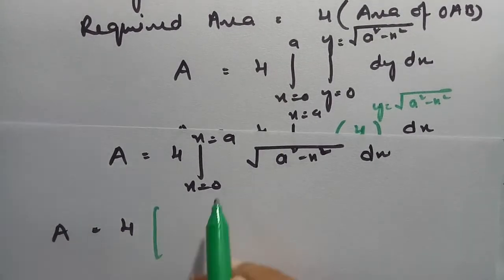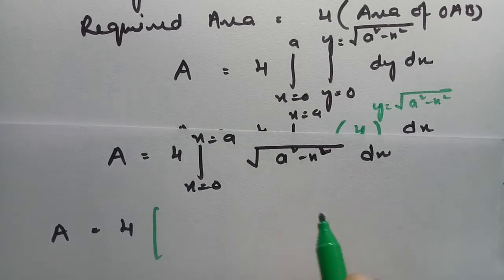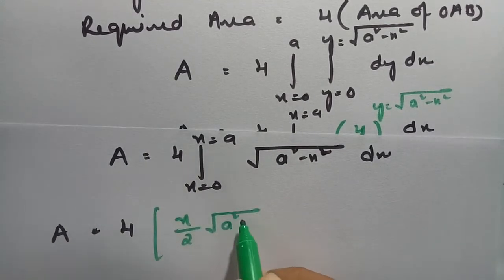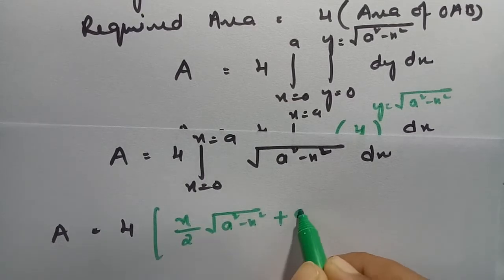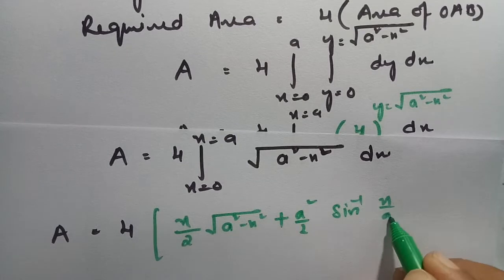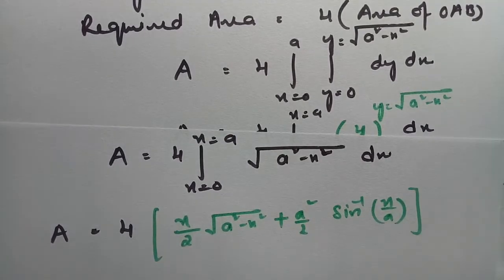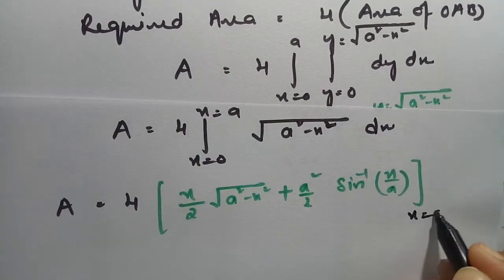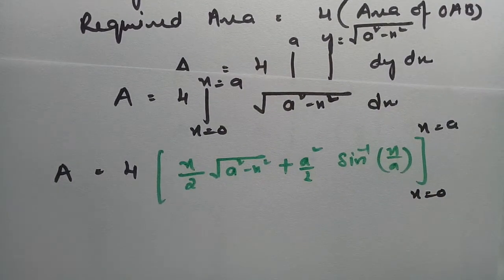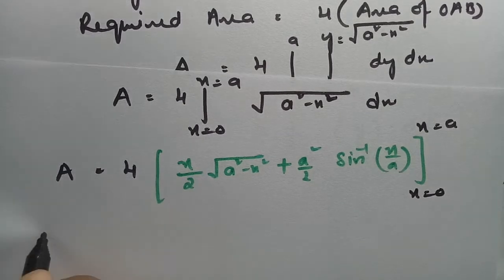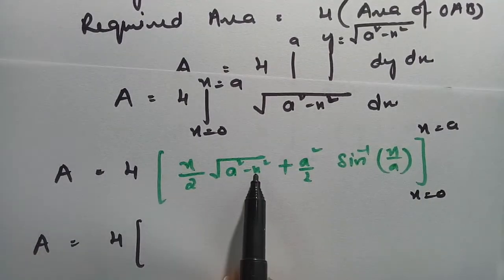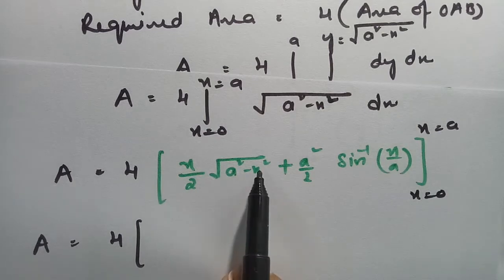The formula for ∫√(a² − x²) dx is: (x/2)√(a² − x²) + (a²/2) sin⁻¹(x/a), evaluated between the limits x = 0 and x = a. Substituting the upper limit x = a: the term (a/2)√(a² − a²) = 0, and we get (a²/2) sin⁻¹(a/a).